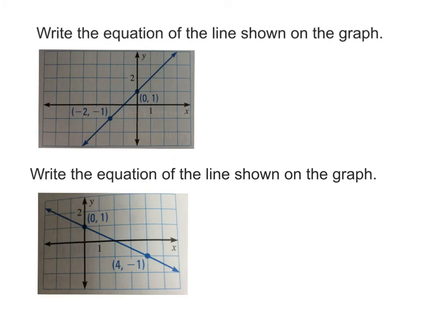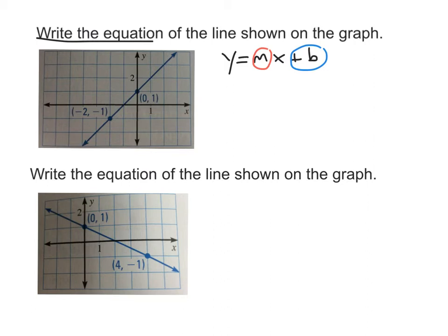The next way we're going to work on writing the equation of a line is based on the graph. Here we have an example of a graph, and our job is to write the equation for the line shown. Starting with y equals mx plus b, we need to know what m and b are, so it helps to go to the side and write those down.